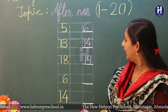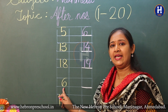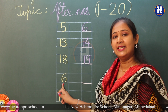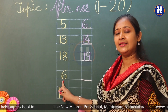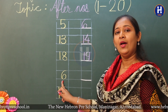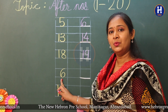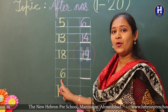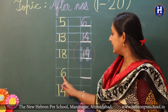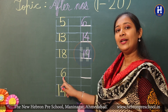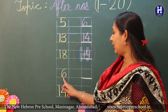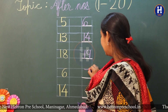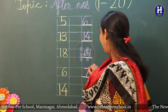Which number is this? Yes, it is number six. So let's start counting till six: one, two, three, four, five, six. What comes next? What is the after number of six? Yes, it is number seven.